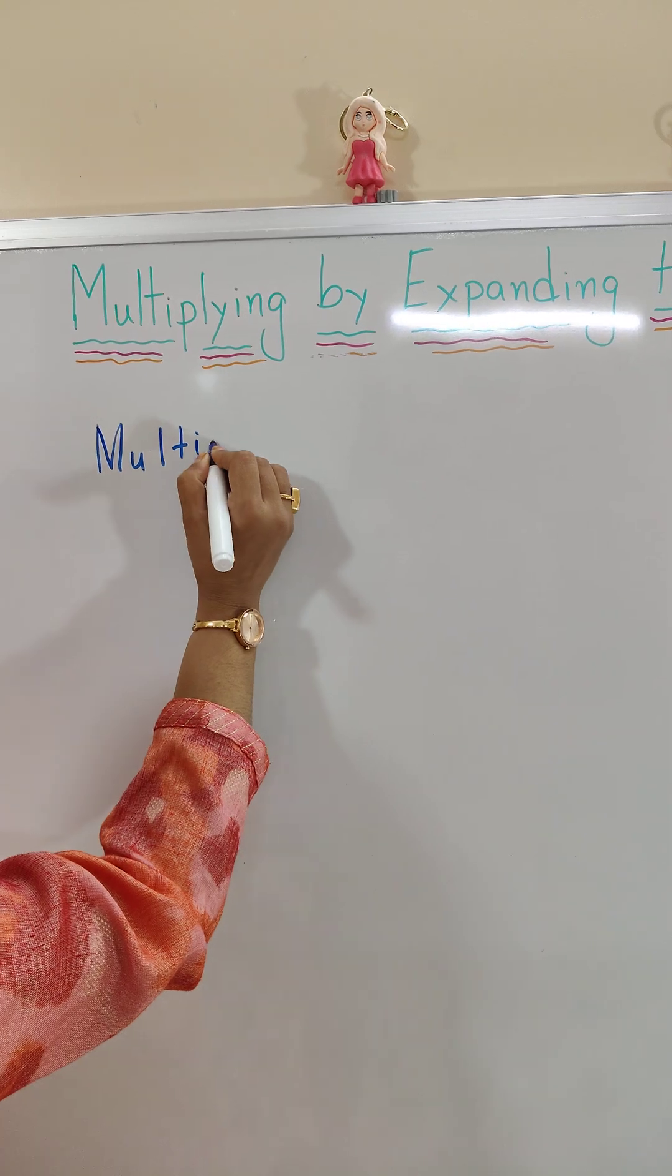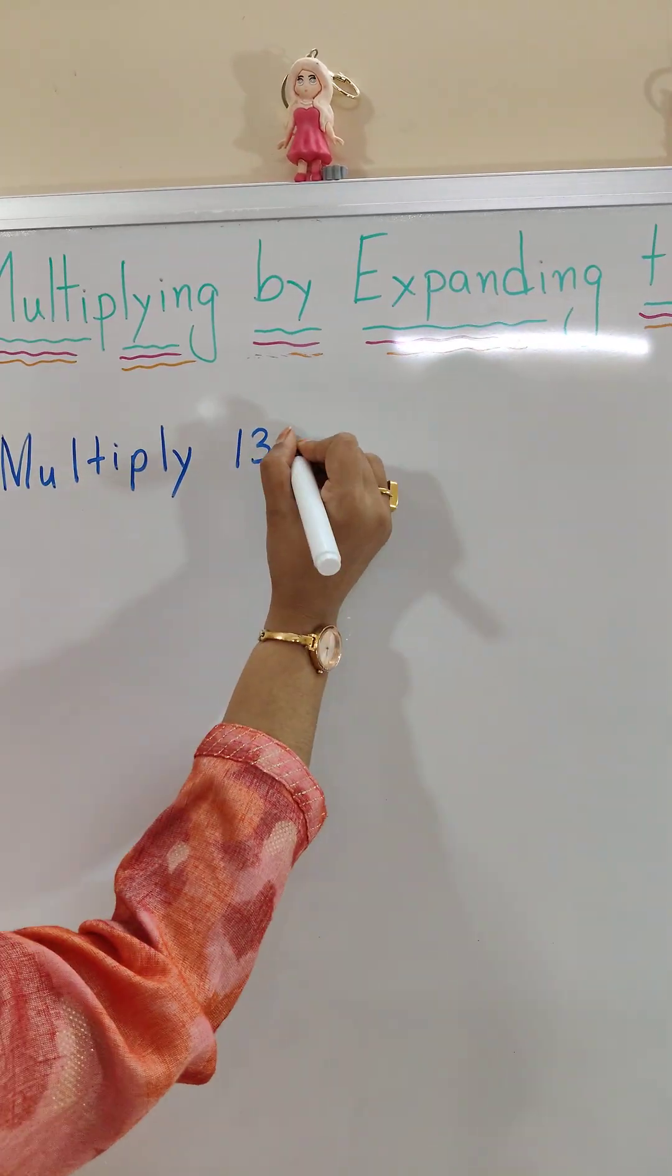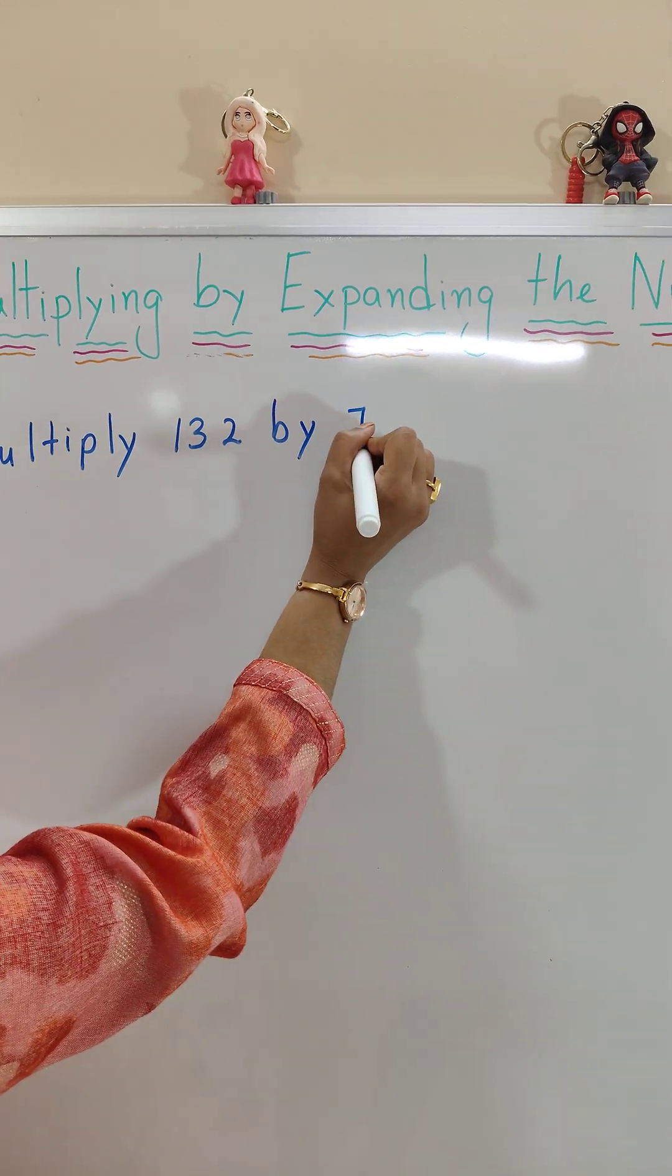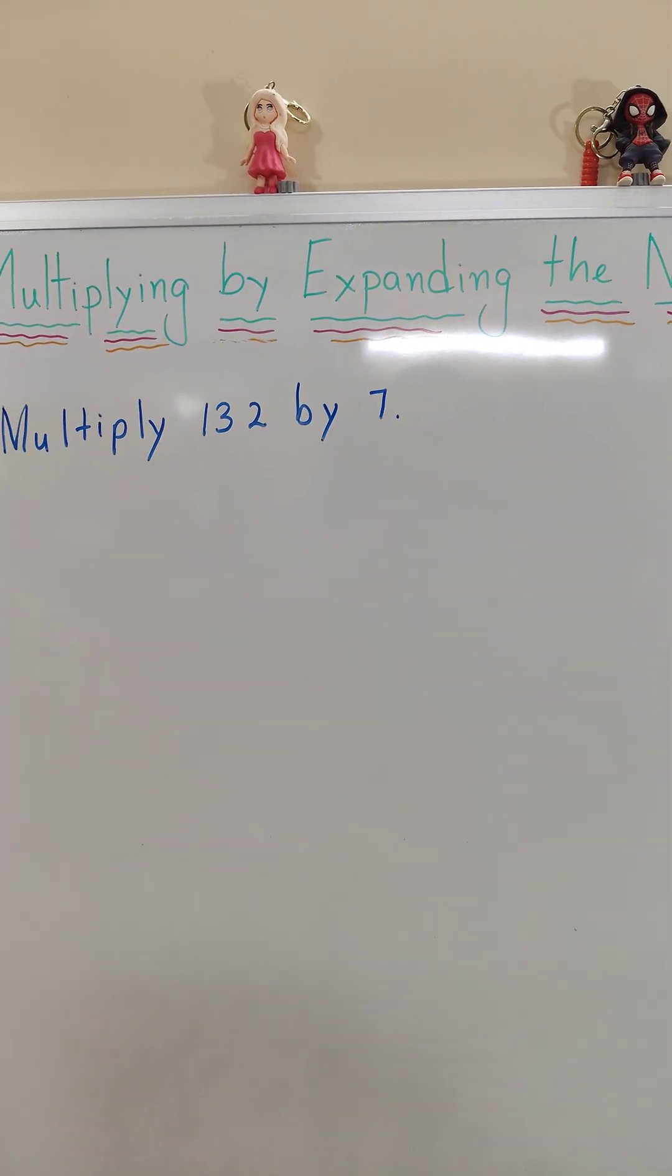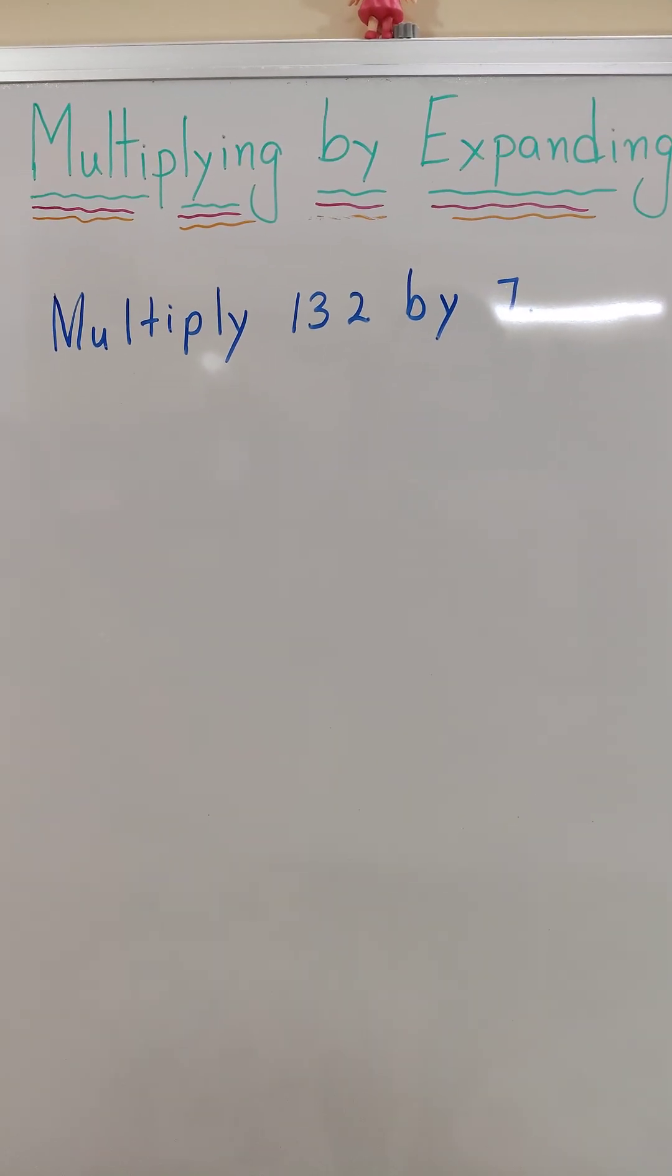Multiply 132 by 7. So first we have to write 132 in expanded form.